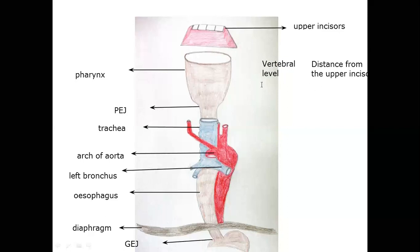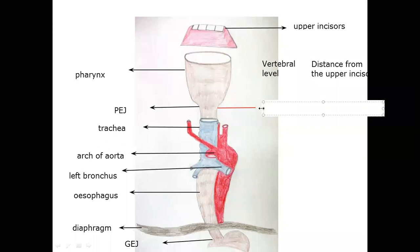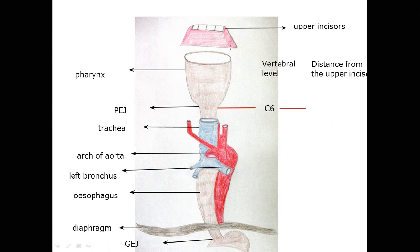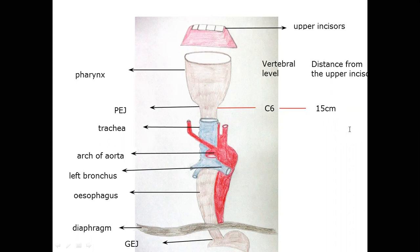The first constriction is the pharyngo-esophageal junction. The pharyngo-esophageal junction is at the vertical level of C6. And the distance from the upper incisors is 15 cm. So the first constriction is the pharyngo-esophageal junction, at the level of C6, and 15 cm from the upper incisors.